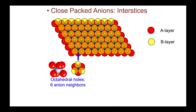In the view shown, we can see the three anions above the cation site, and those in red are the three anions below. On the left, I've shown using a polyhedron that the cation, should it go in this position, would have octahedral six-fold coordination. Such a polyhedron is shown here — we'll get into this more later on.